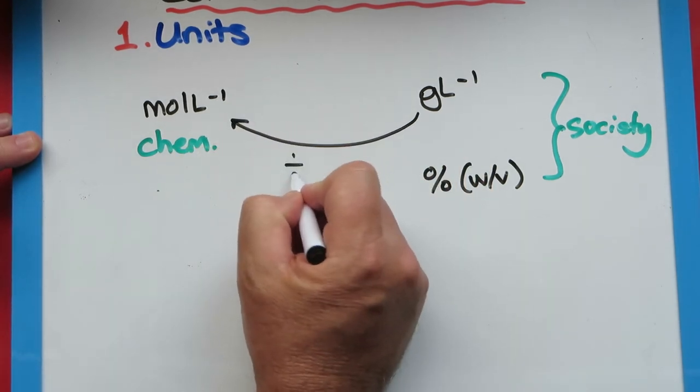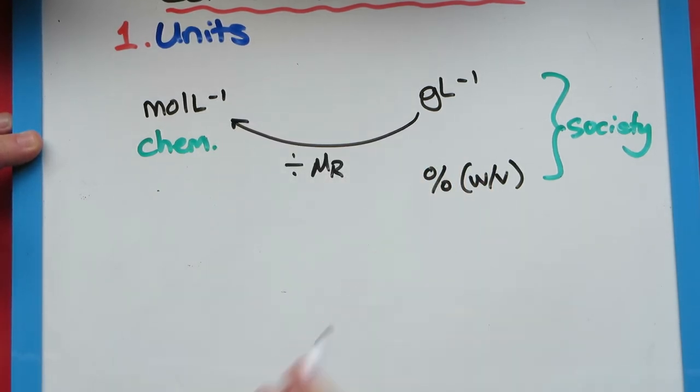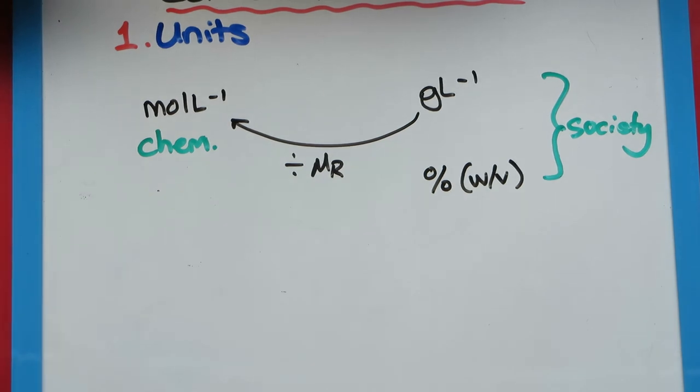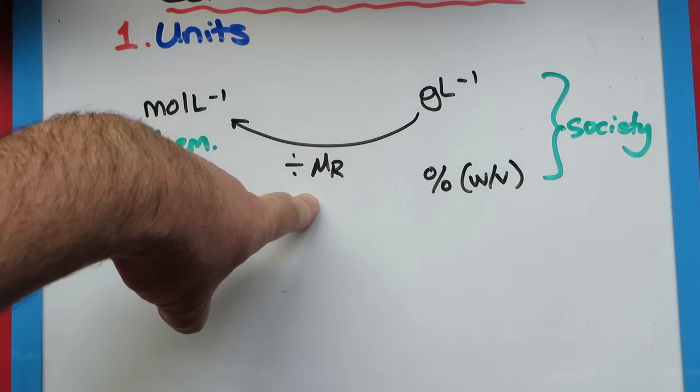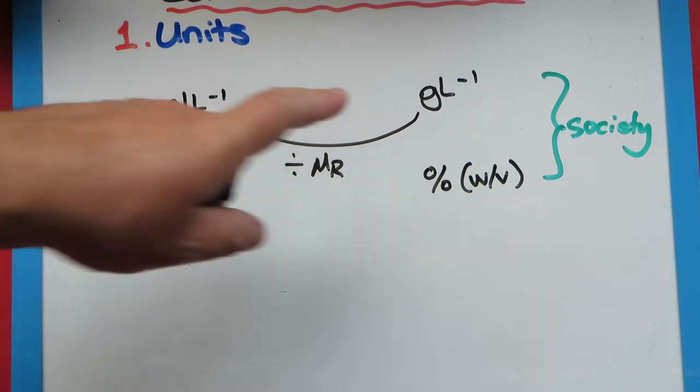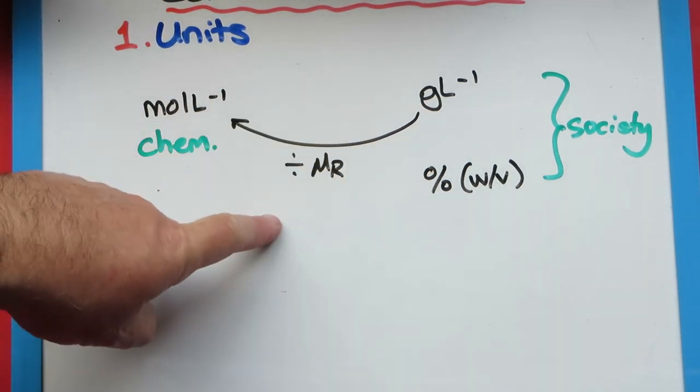I divide by the molar mass, the relative molar mass of that substance. The relative molar mass—if it was citric acid, vitamin C, if it was sugar it would be whichever one it is, let's say sucrose—the molar mass of sucrose. I need to work out the molar mass using my periodic table or looking it up on the internet, and I divide my grams per liter by that number to get moles per liter.